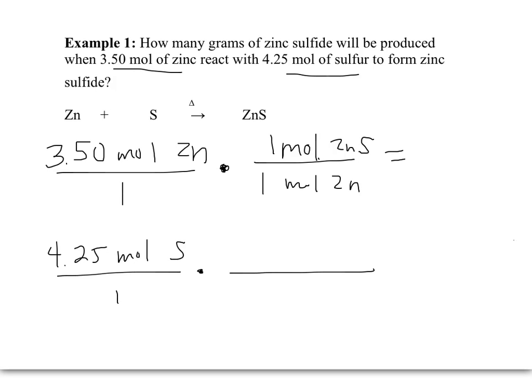I'm going to use stoichiometry to predict how much product each reactant can produce. So 3.50 moles of zinc can produce 3.50 moles of zinc sulfide. 4.25 moles of sulfur produce 4.25 moles of zinc sulfide. The reactant that produces less product is going to be our limiting reactant.